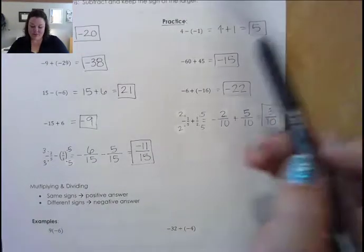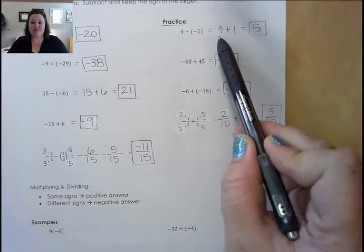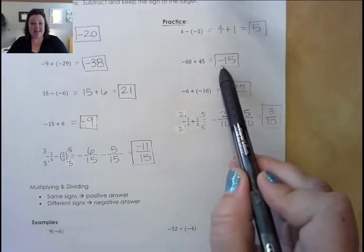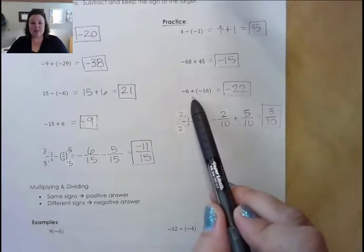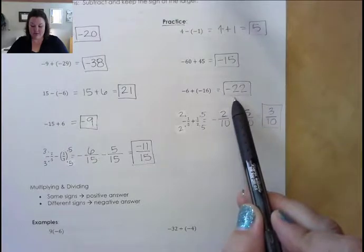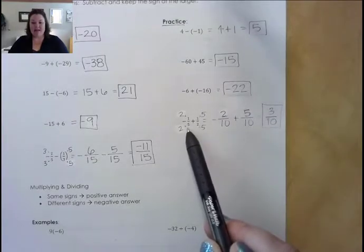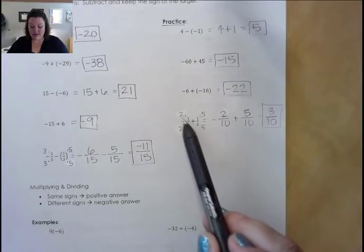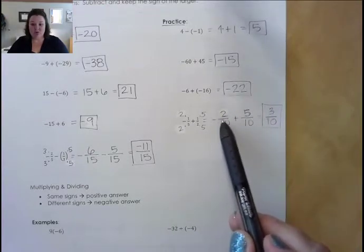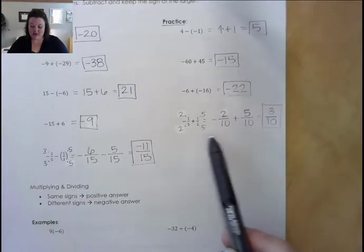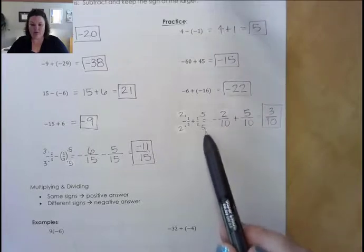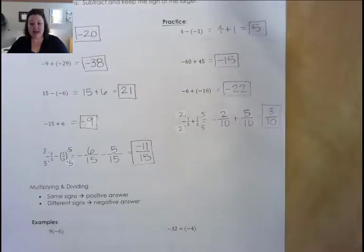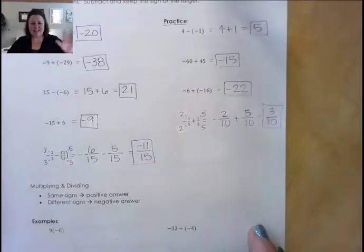Let's go over the practice problems. On the first one, double negatives become positive, so this becomes 4 plus 1, which is 5. Second one, we have opposite signs, so we subtract and keep the larger sign, which is negative — this becomes negative 15. The third example, we have two negatives, so we combine and it stays negative: negative 22. On the last one, we need a common denominator of 10. Building up the denominator of 5 by multiplying by 2 gives numerator 2; building up the second term's denominator to 10 by multiplying by 5 gives numerator 5. So negative 2 plus 5 leaves us with 3 tenths, which does not reduce.